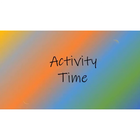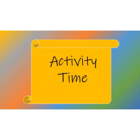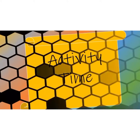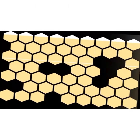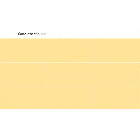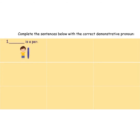You fill in the blanks. Complete the sentences with the correct demonstrative pronoun. First one: 'Dash is a pen.' What will come here? Fill in the blank. The answer is: 'This is a pen.'